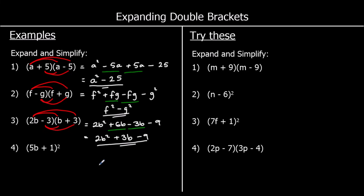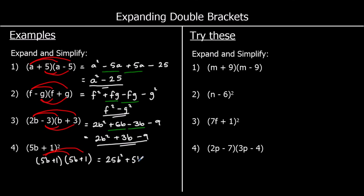The last one: (5b+1) squared — when something's squared it means it's multiplied by itself, so we've got (5b+1) times (5b+1). Following the same steps: 5b times 5b — five fives are 25, b times b is b squared, so that's 25b squared. 5b times one is 5b. One times 5b is 5b. And one times one is one. Collecting like terms: 5b and 5b makes 10b, so we've got 25b squared plus 10b plus one.